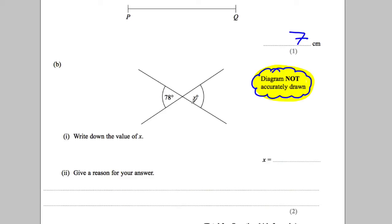So it's asking you the value of x. Well, x turns out to be 78, and the reason is because opposite angles are equal. You have to remember the term opposite angles are equal.